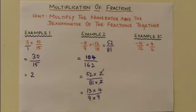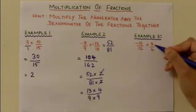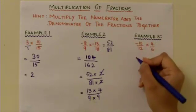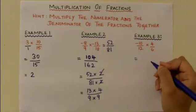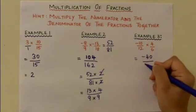The next example has two fractions, one negative and one positive: -10/12 times 4/6. Multiplying the numerators together, -10 times 4 equals -40, and the denominators, 12 times 6 equals 72.